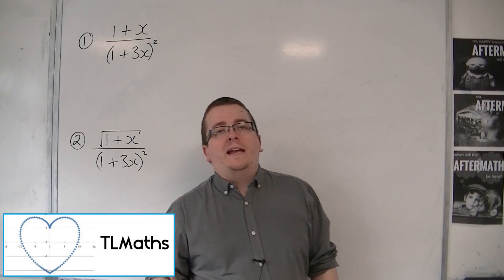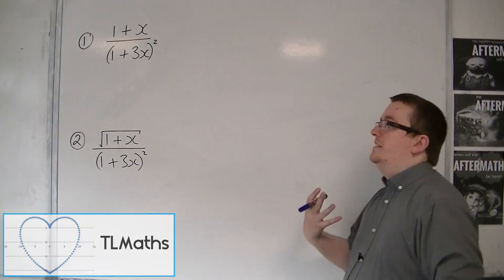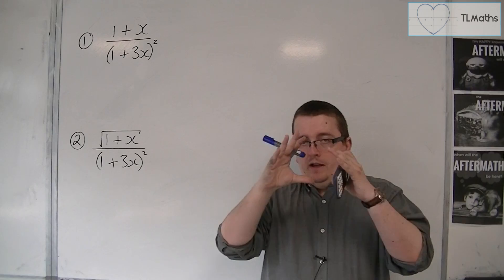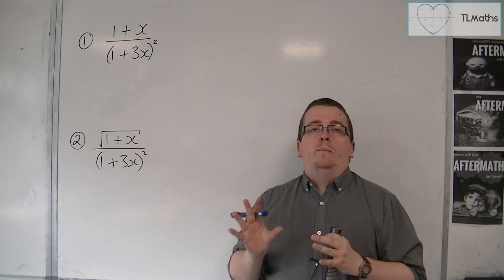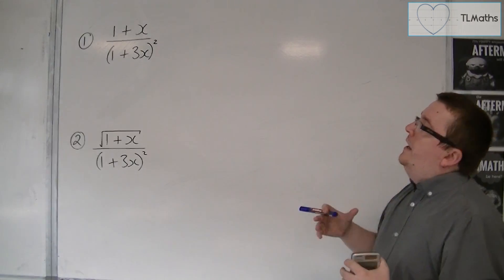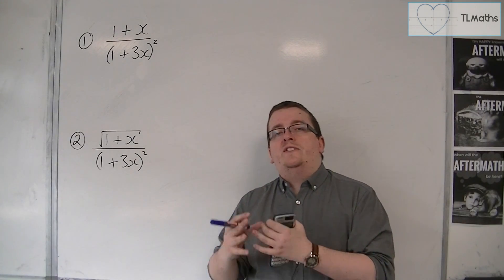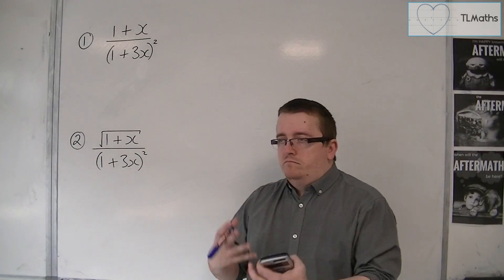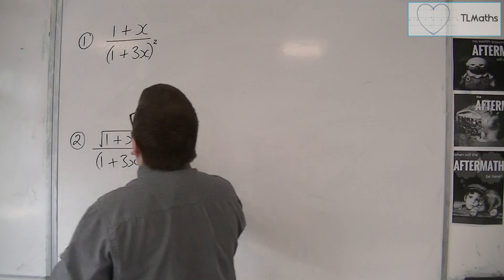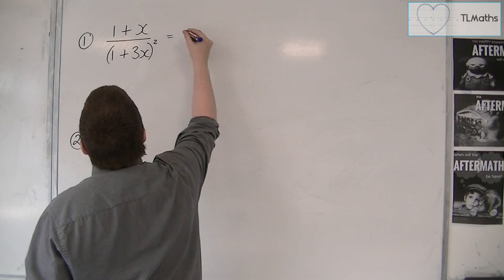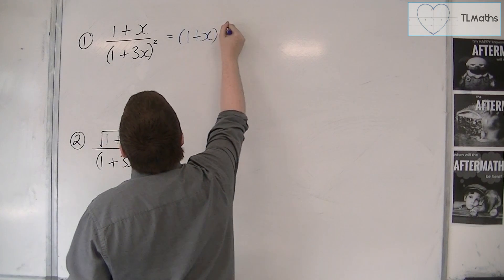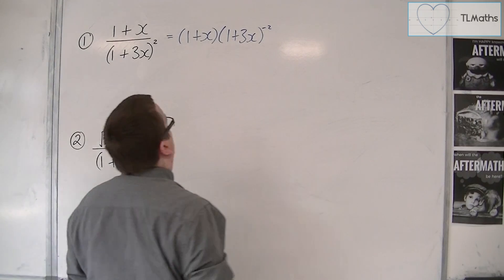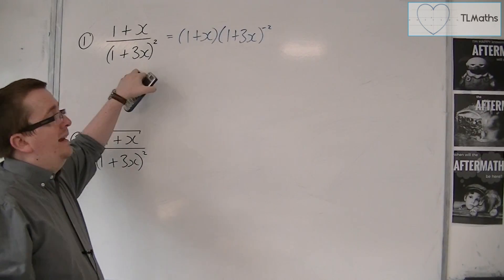In this video we're going to be looking at two more tricky examples. We're going to expand both of these. It may not be immediately obvious how we're going to go about doing that, but once you notice that you could write this as one expansion multiplied by another, it's pretty straightforward from there. For this first one, you could write this as (1 + x) times (1 + 3x) to the power of minus two. These are exactly the same.